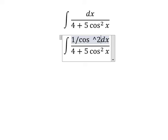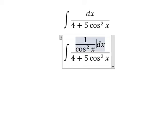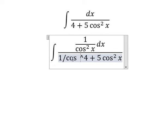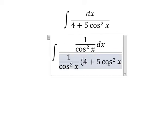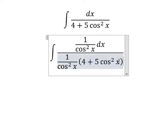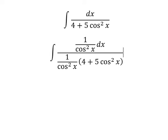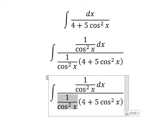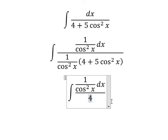So this one multiply by four and five cosine x square, so we have like this.